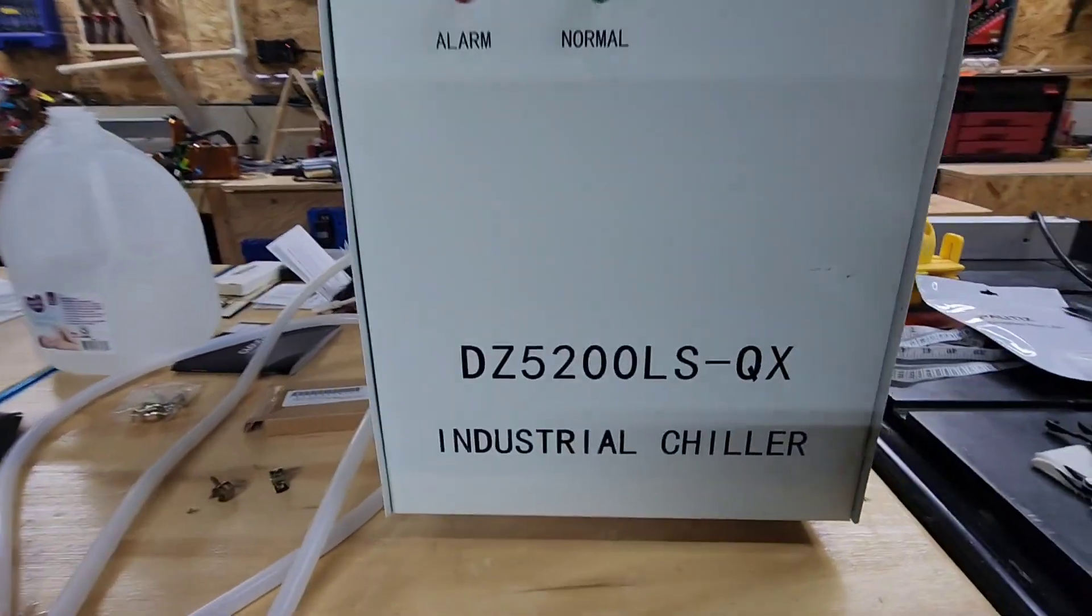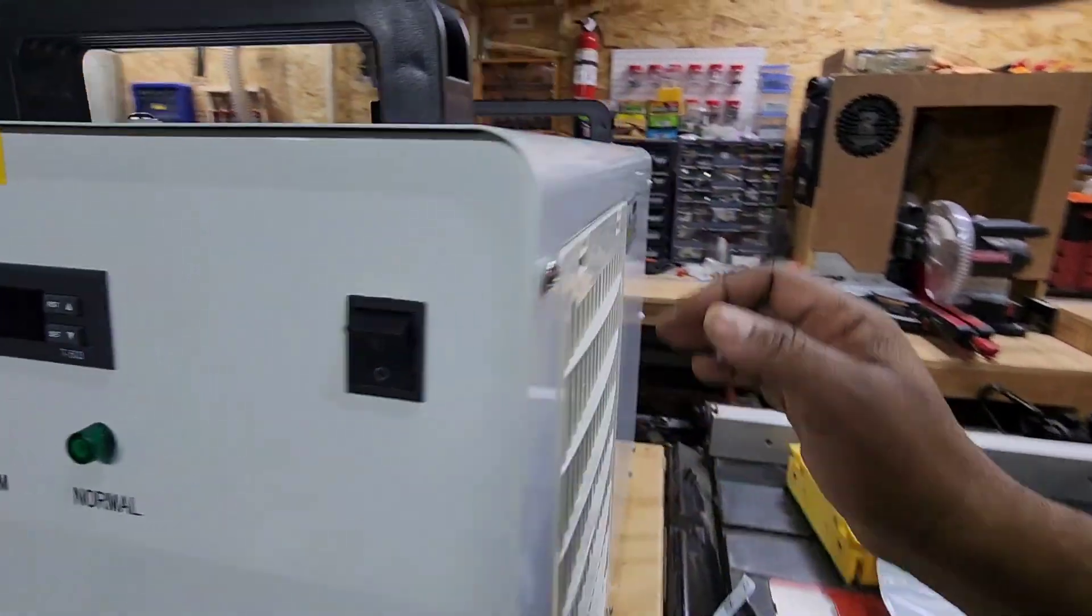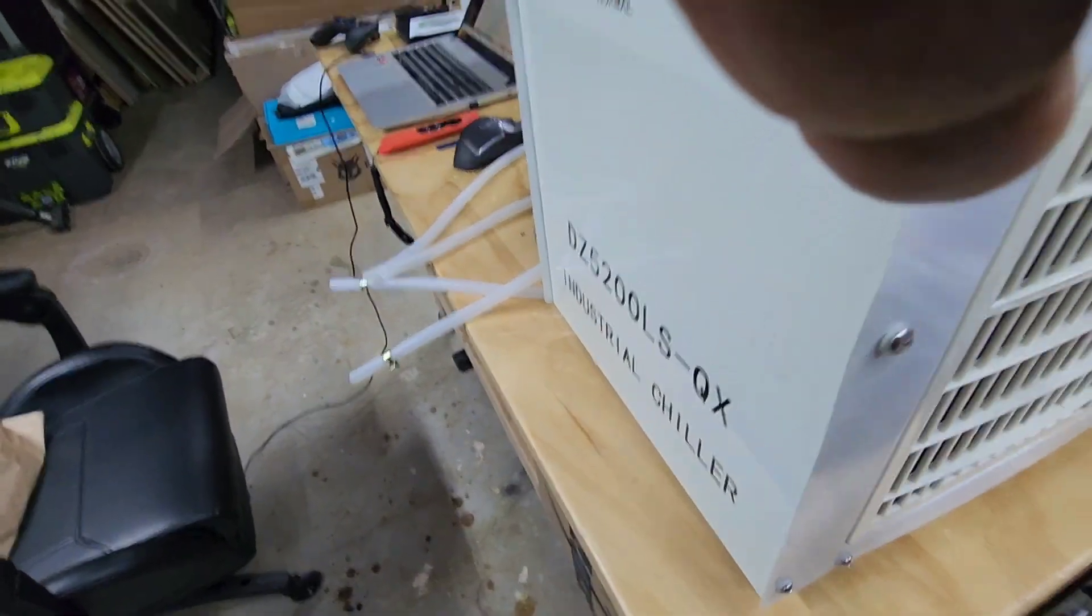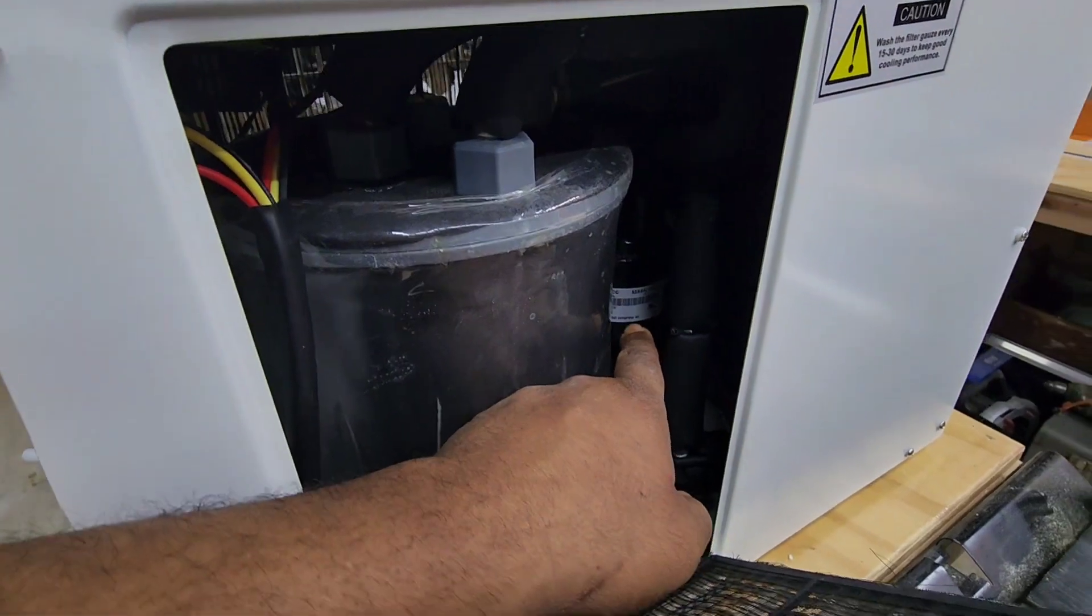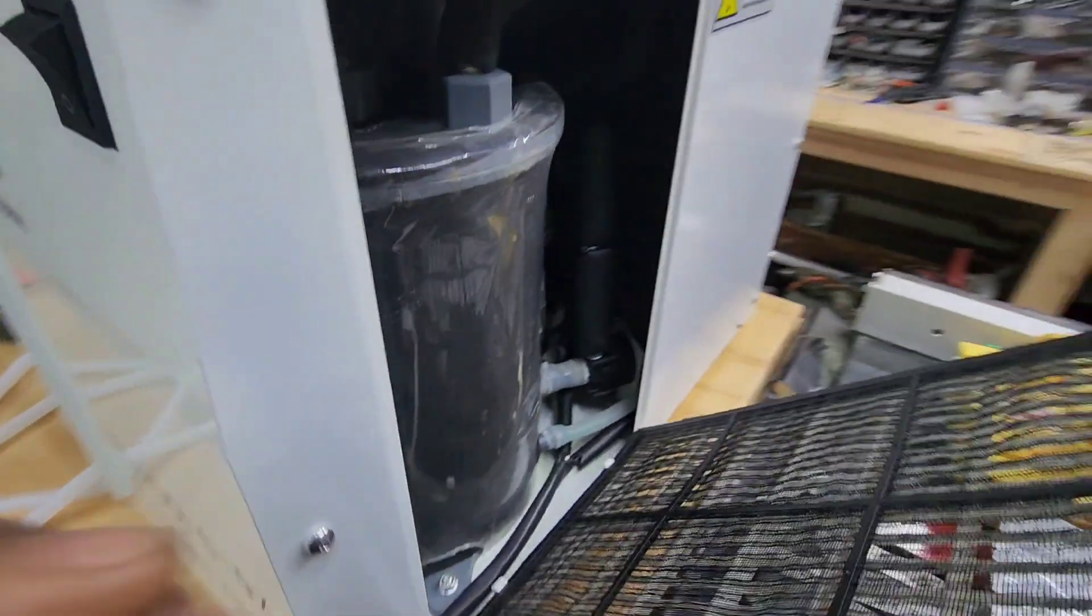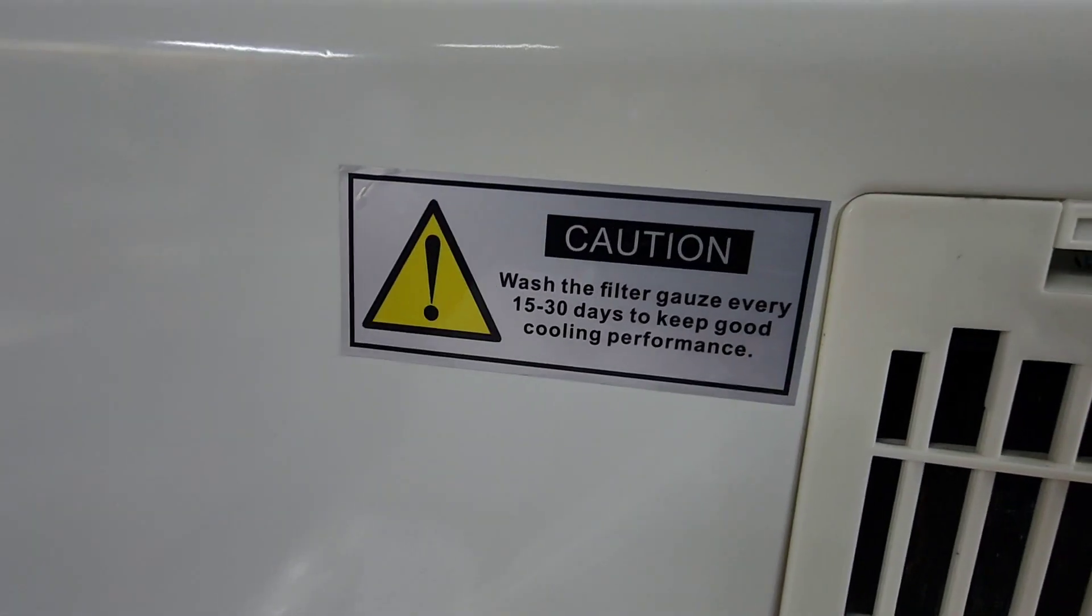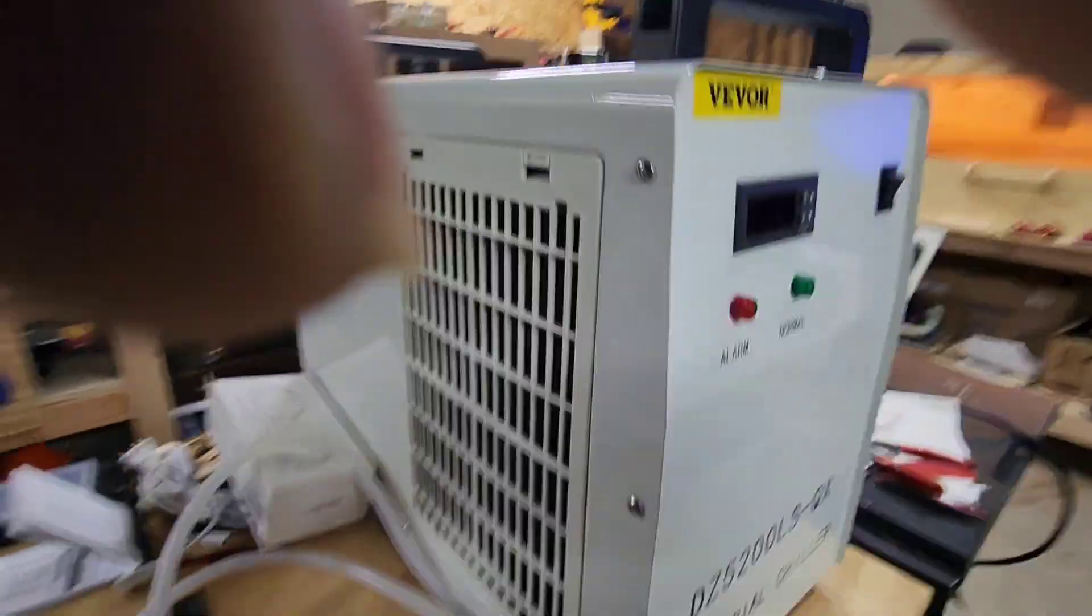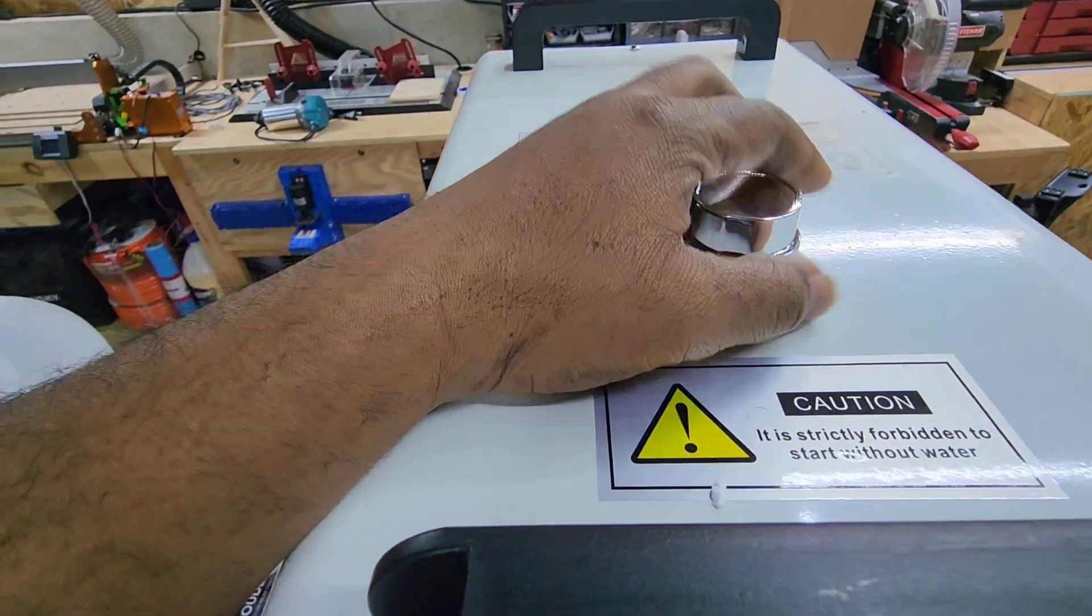We have the 5200. It is an actual chiller. It has an actual refrigerant unit on the inside, an on-off switch, input and output. It has filters here on both sides. This is the water tank here, has a compressor back here and coils in the back. It has a filter on this side and another filter on this side, and it tells you to clean your filter every 15 to 30 days for good cooling performance. It also has a water fill spout up here at the top. I'm going to fill that up with distilled water.